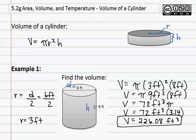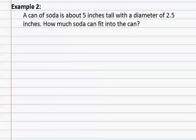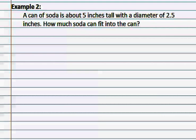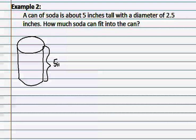In Example 2, we will be looking at a story problem. We have a can of soda that is about five inches tall with a diameter of 2.5 inches. How much soda can fit into the can? Sometimes it is helpful to draw a quick image. We can then label our pieces. We know that the can is five inches tall. We also know that the diameter, or the distance across, is 2.5 inches.